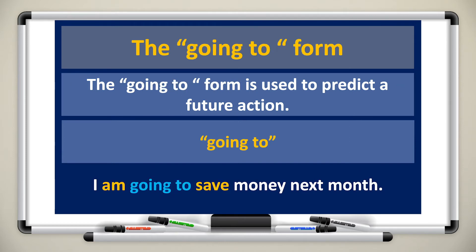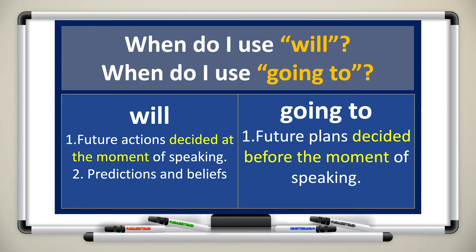Another word for expressing the future tense is 'going to'. The going to form is also used to predict a future action. For example, 'I am going to save money next month.' The word 'next month' is a keyword that informs the reader or listener that this action will happen in the future. The question is: when do I use 'will' and when do I use 'going to'? We use 'will' for future actions decided at the moment of speaking or for predictions and beliefs. We use 'going to' for future plans already decided before the moment of speaking.